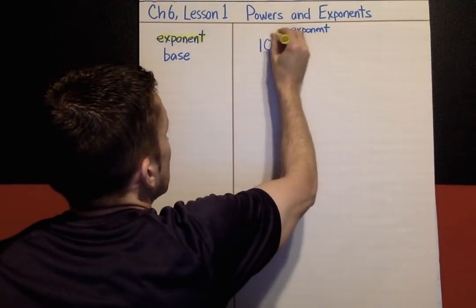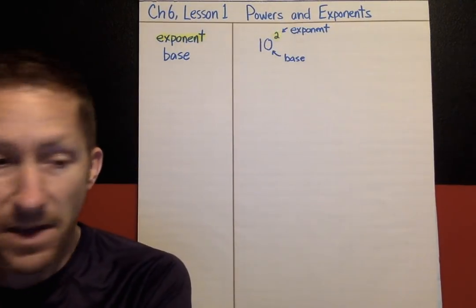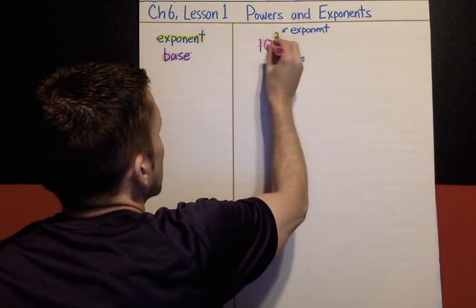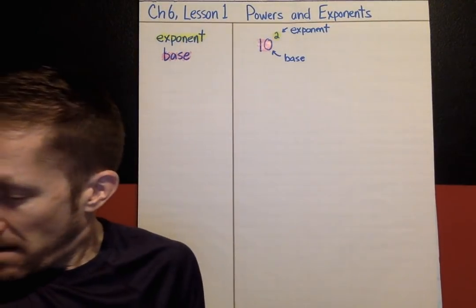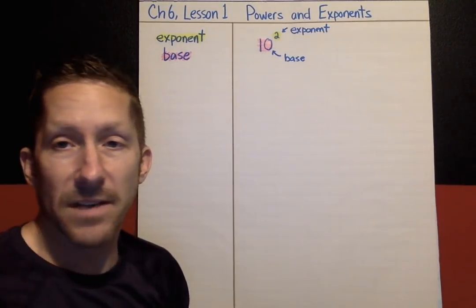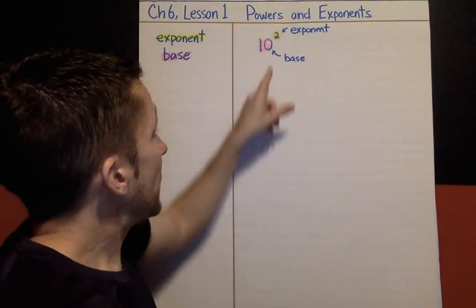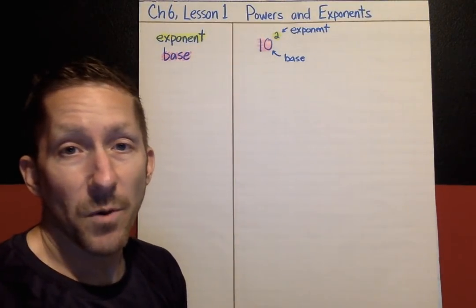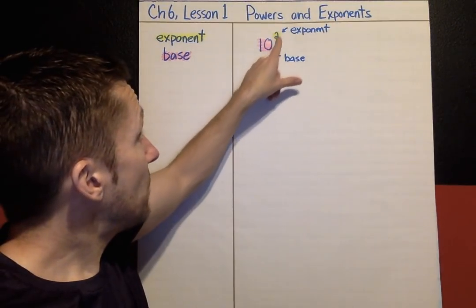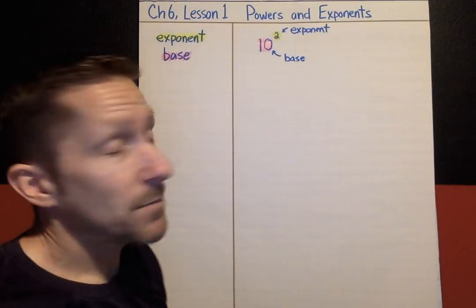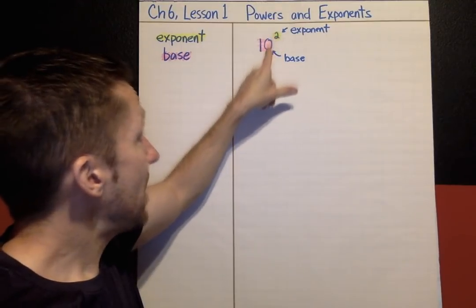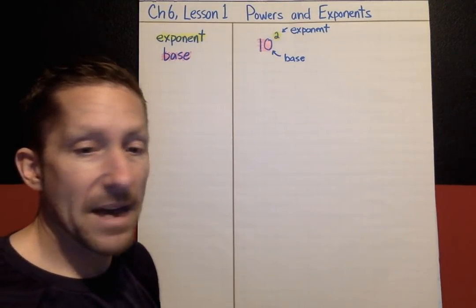The exponent is the little raised up number, and the base is this number. So exponents — 10 to the second power is how I would say that. What is 10 to the second power? If you are thinking 20, then you are making one of the common mistakes. You do not multiply the base and the exponent. That is not how you solve exponents.